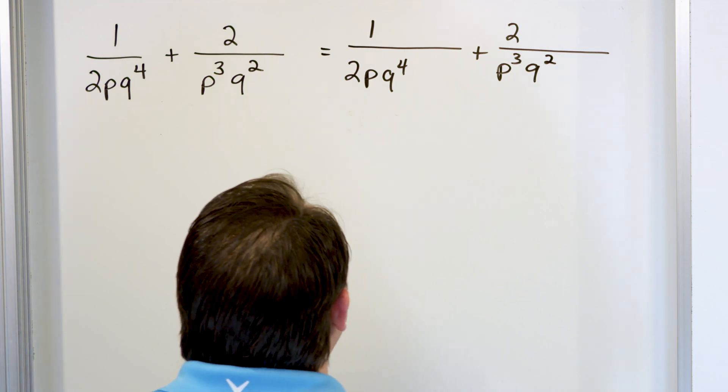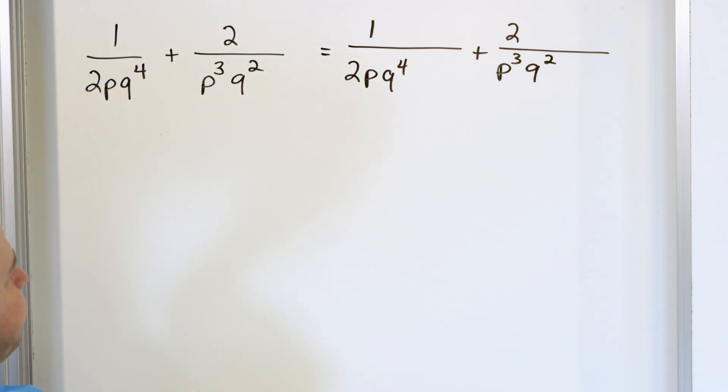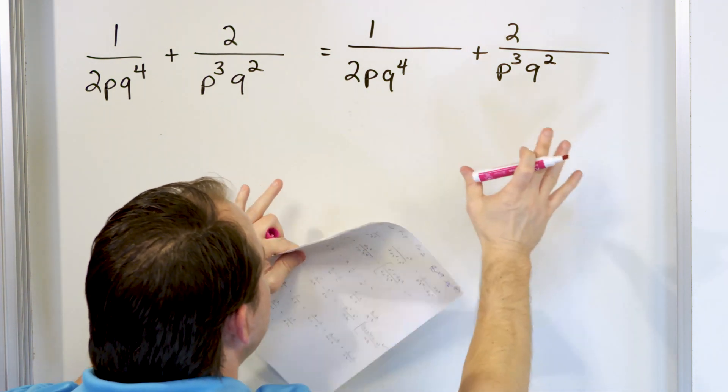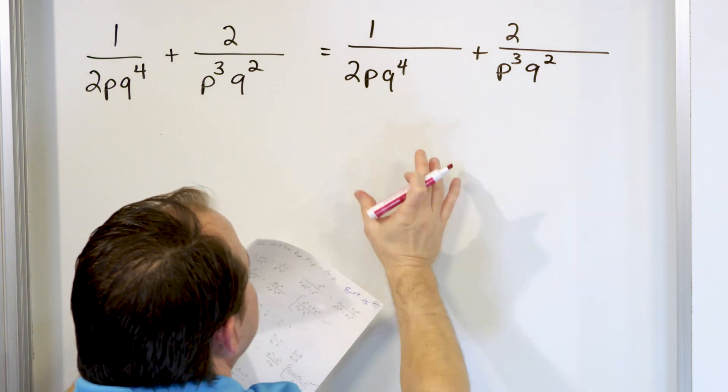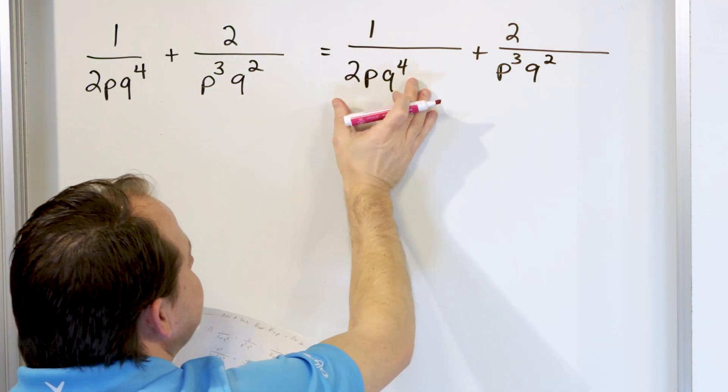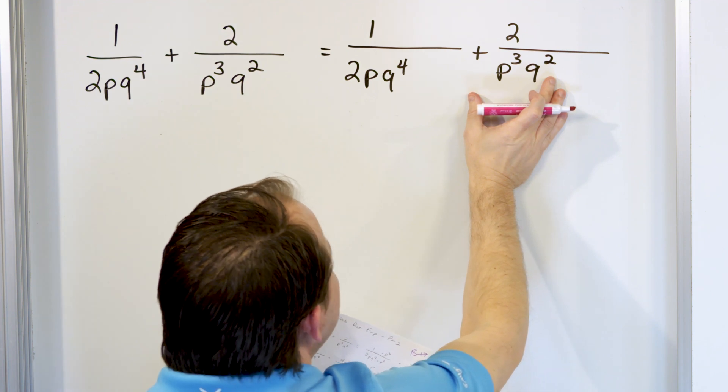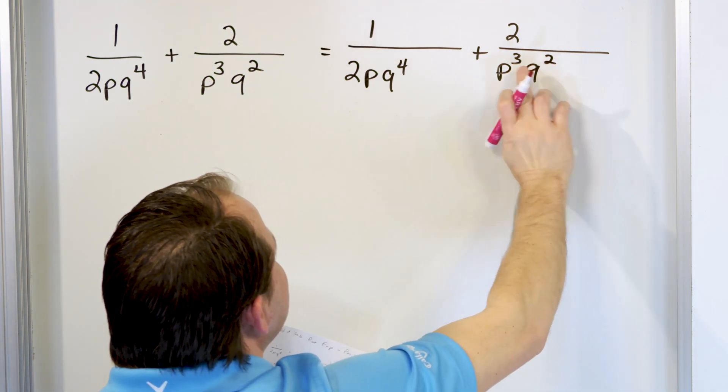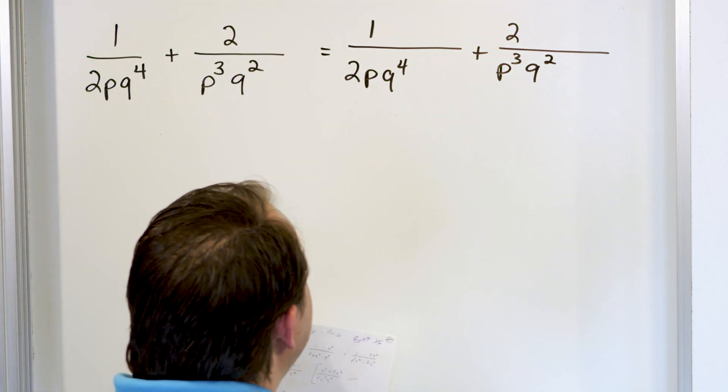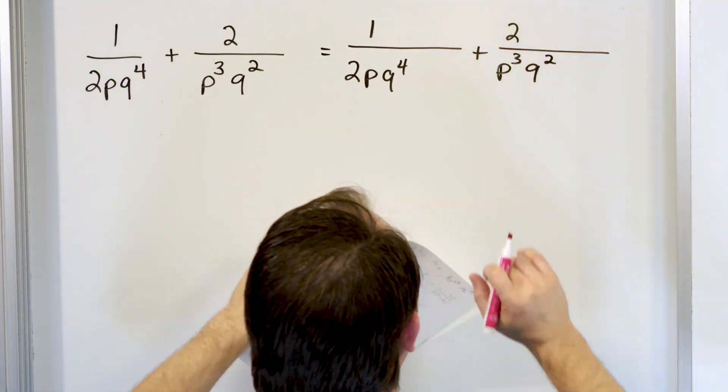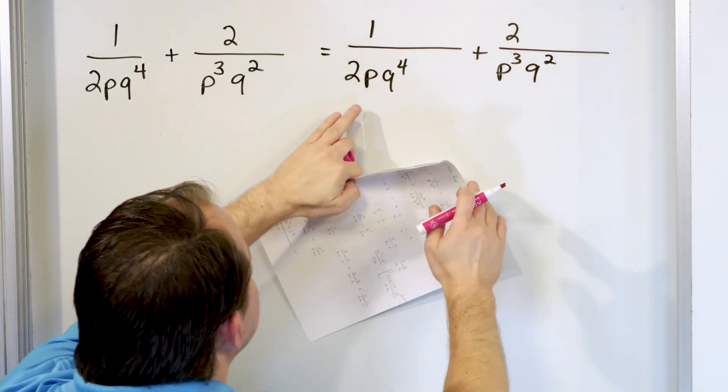Alright, so what we have here is 2pq to the 4th. Now, we want a common denominator. We have to make them both the same. There's no way that I can multiply this by something to give me this. It's just not possible because I only have two q's here and four here. So what I have to do is look at what's common to both of them and figure out what to multiply by. So what you do is you say, well, I only have one p here and I have three of them here. So I know I'm going to have to multiply and give me two more p's.